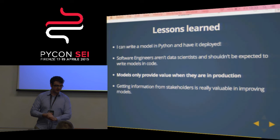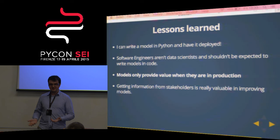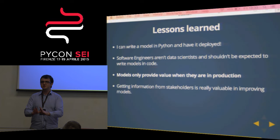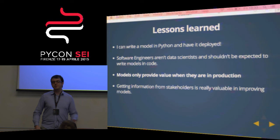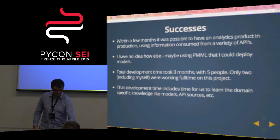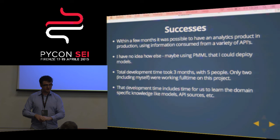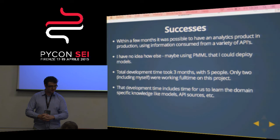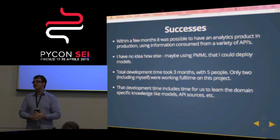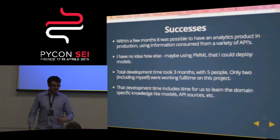Lessons learned: I can write a model in Python and have it deployed, so I'm useful. Software engineers aren't data scientists and shouldn't be expected to write model code. Most importantly: models only provide value when they are in production, and getting information from stakeholders is really valuable in improving models. Successes: within a few months, it was possible to have an analytics product in production using information from a variety of APIs. Total development time was three months with five people — only two including myself and a back-end engineer were full-time, as the rest were distributed on other projects. Development time includes time to learn domain-specific knowledge, models, APIs, etc.